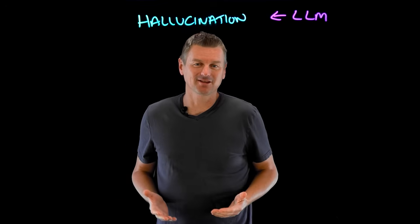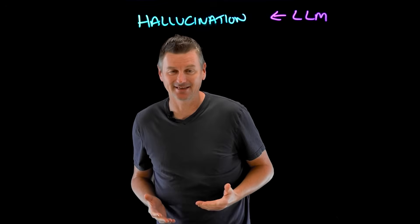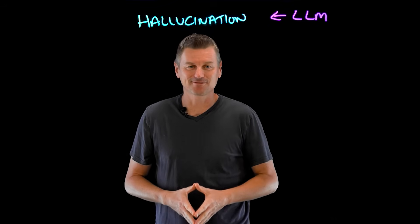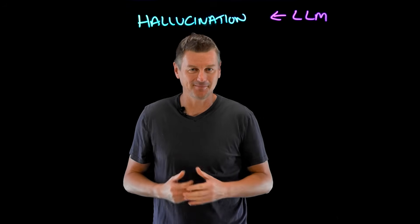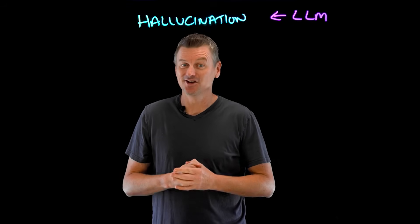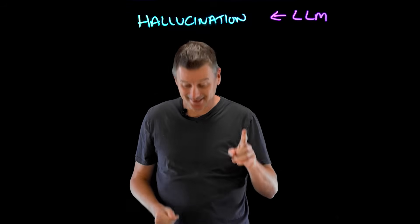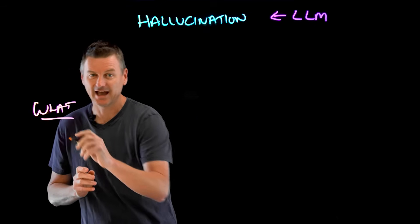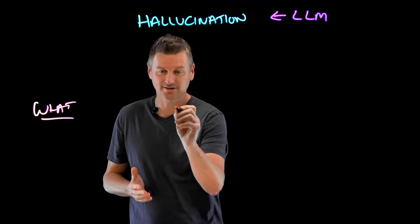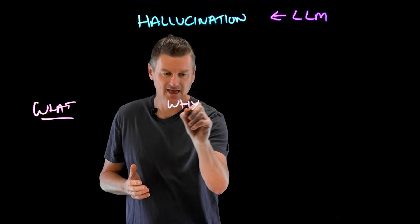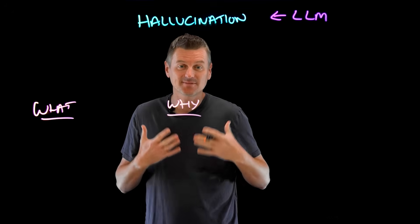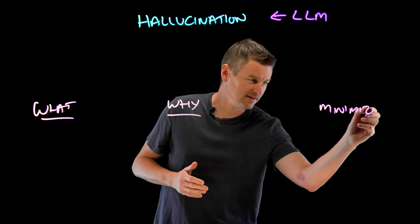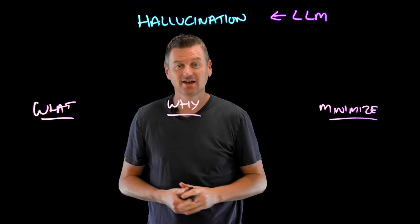Now, while large language models can generate fluent and coherent text on various topics and domains, they are also prone to just make stuff up — plausible sounding nonsense. So let's discuss, first of all, what a hallucination is, why they happen, and some steps to describe how you can minimize hallucinations with LLMs.